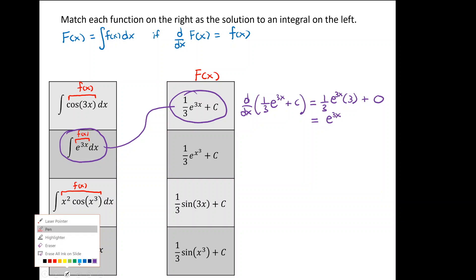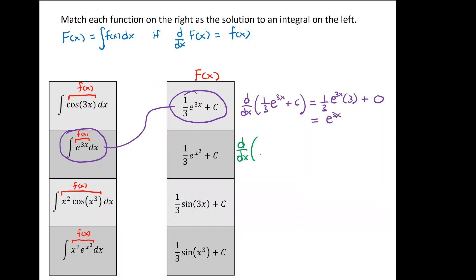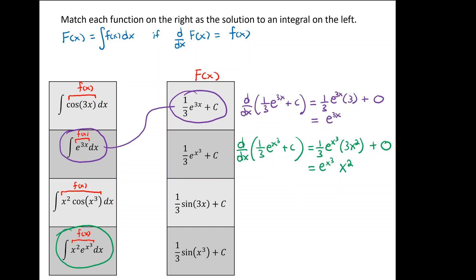For the next match, take d by dx of one-third times e to the x-cubed plus C. The constant factors out; we use the chain rule on e to the x-cubed, getting e to the x-cubed times 3x-squared, plus zero. The one-third and the 3 in 3x-squared cancel, but x-squared survives, giving e to the x-cubed times x-squared. That matches with the last integral on the left.